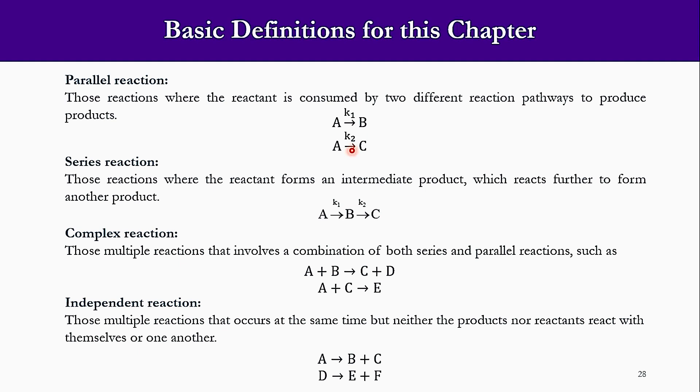In the series reaction, the reactant forms an intermediate product which further reacts to form another product, like A produces B and then B produces C. If you see these two, k1 is the rate constant for conversion of A to B, and k2 is the rate constant for conversion of B to C.